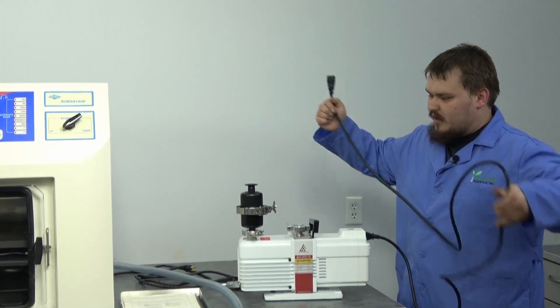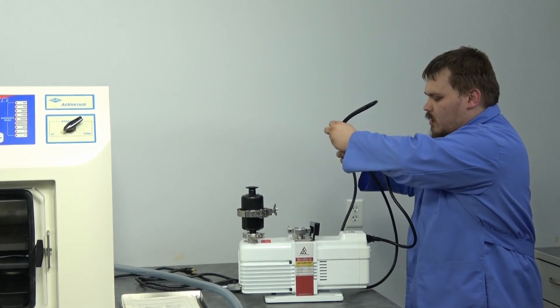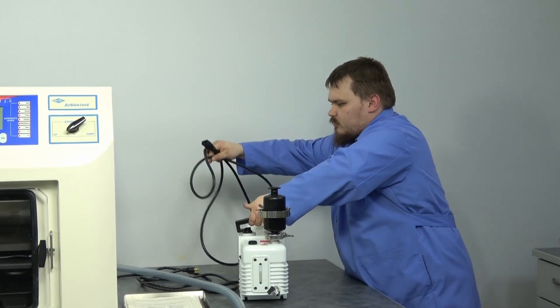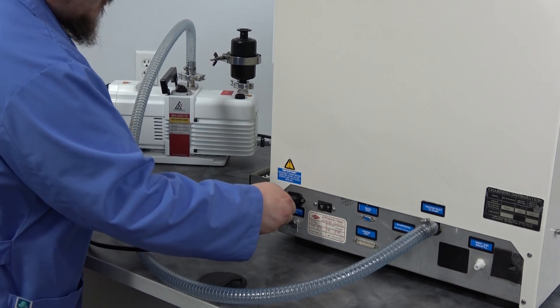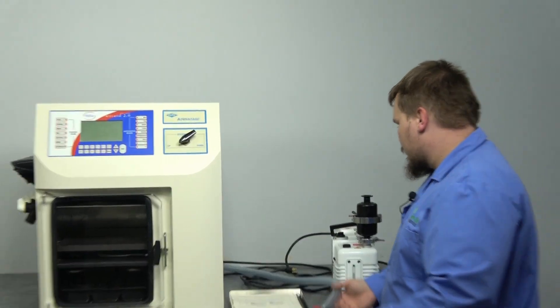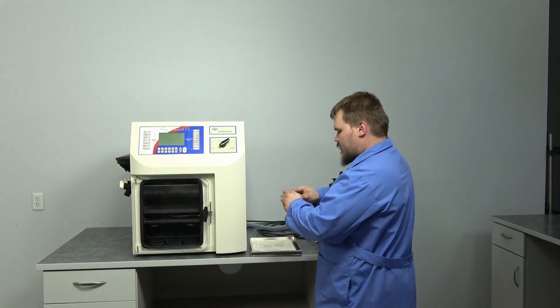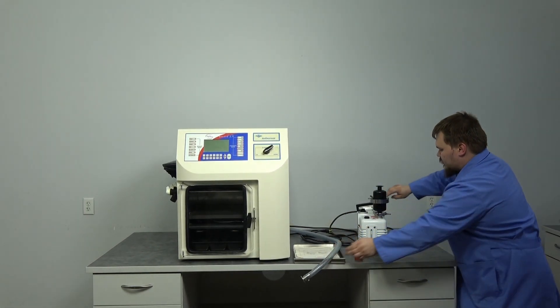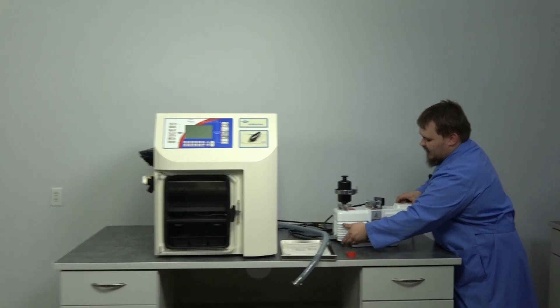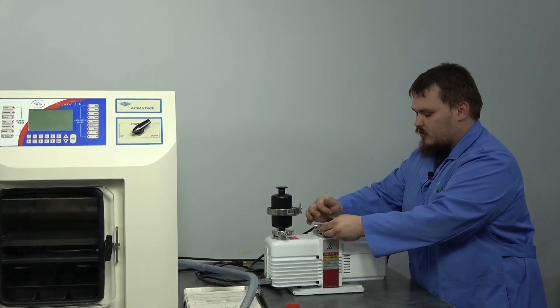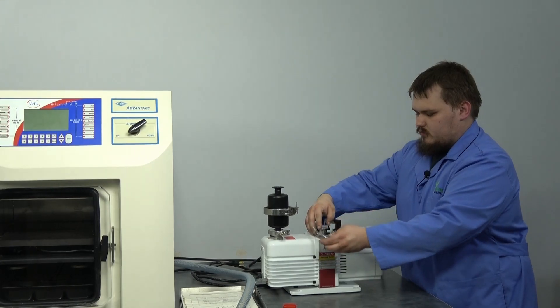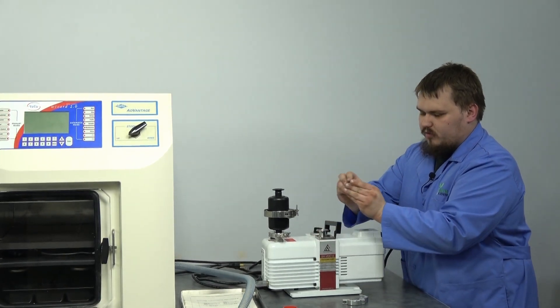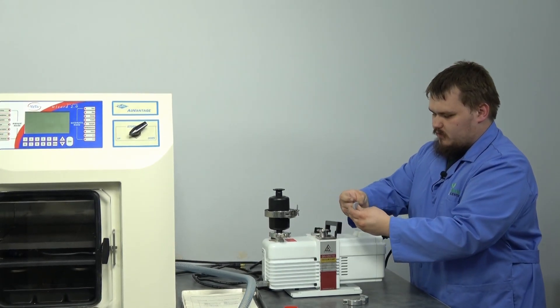And then the other end of the connection is going to go onto the back of the machine. From there, we're going to pull off the caps on both the hose end here and on the vacuum pump—there is a cap on there also.